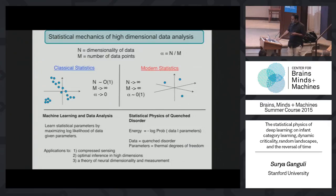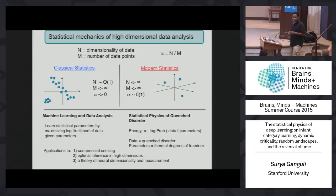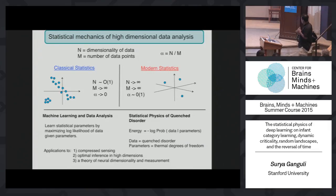Another direction in our lab is the statistical mechanics of high-dimensional data analysis, very relevant in the age of the Brain Initiative where we're developing large-scale data sets. The classical statistics edifice is predicated on the assumption that you have many data points and a small number of features. But nowadays we have a large number of data points and a large number of features—for example, recording from 100 neurons using electrophysiology for only 100 trials—so the ratio of data to features is order one. It's a significant challenge to do data analysis in this scenario.